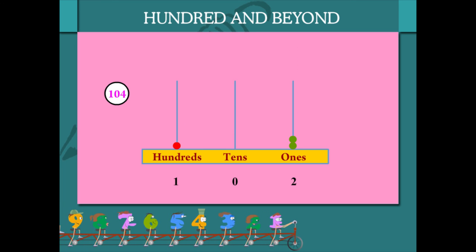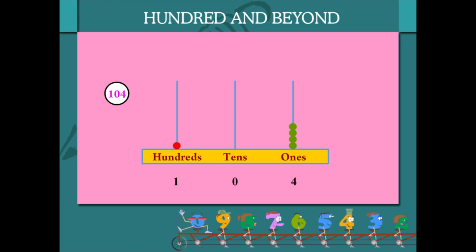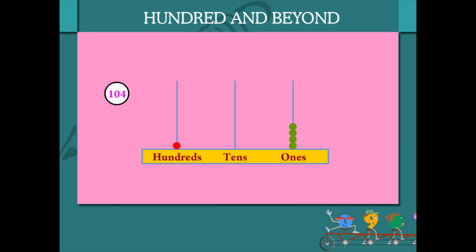Another 1, 2, 3, 4 beads of ones is 104.